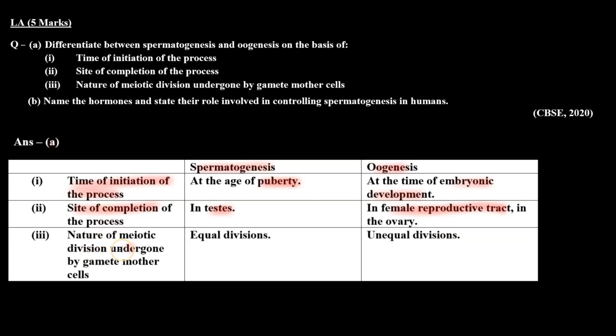Third point mein hume meiotic division ka nature batana tha. Spermatogenesis mein jo meiosis hota hai woh equal division show karta hai, aur oogenesis mein unequal division.